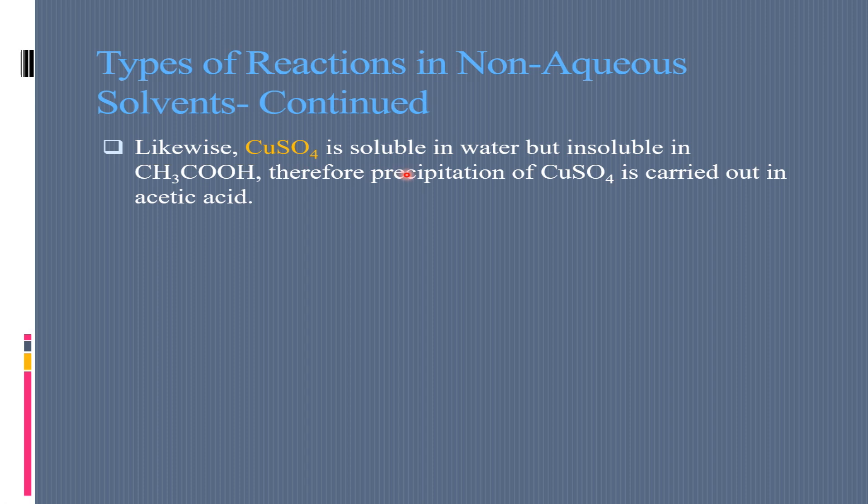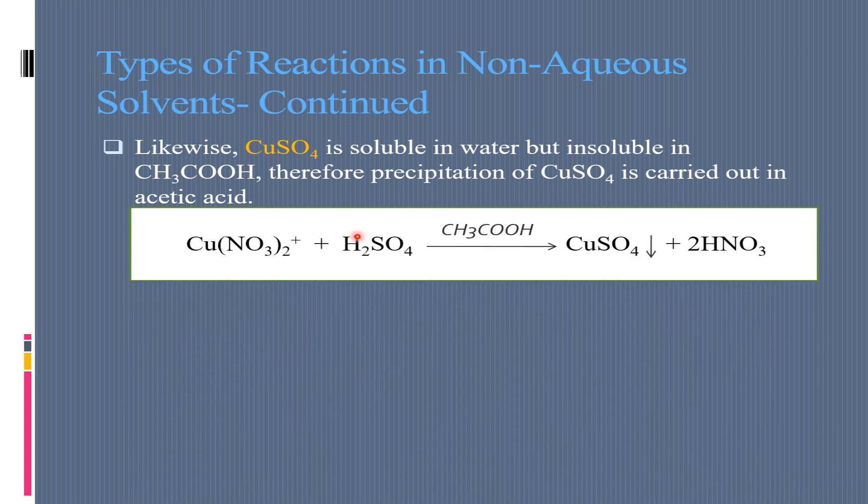Likewise copper sulfate is soluble in water but insoluble in acetic acid. Therefore, precipitation of copper sulfate is carried out in acetic acid. Now we have copper nitrate, Cu(NO3)2, and this is cupric nitrate. Cu is +2 and NO3 is -1. Overall, this has positive charge. Plus H2SO4, and this reaction will carry out in acetic acid. It will be copper sulfate. Because in acetic acid it is insoluble, so it will be insoluble, and you will have HNO3.